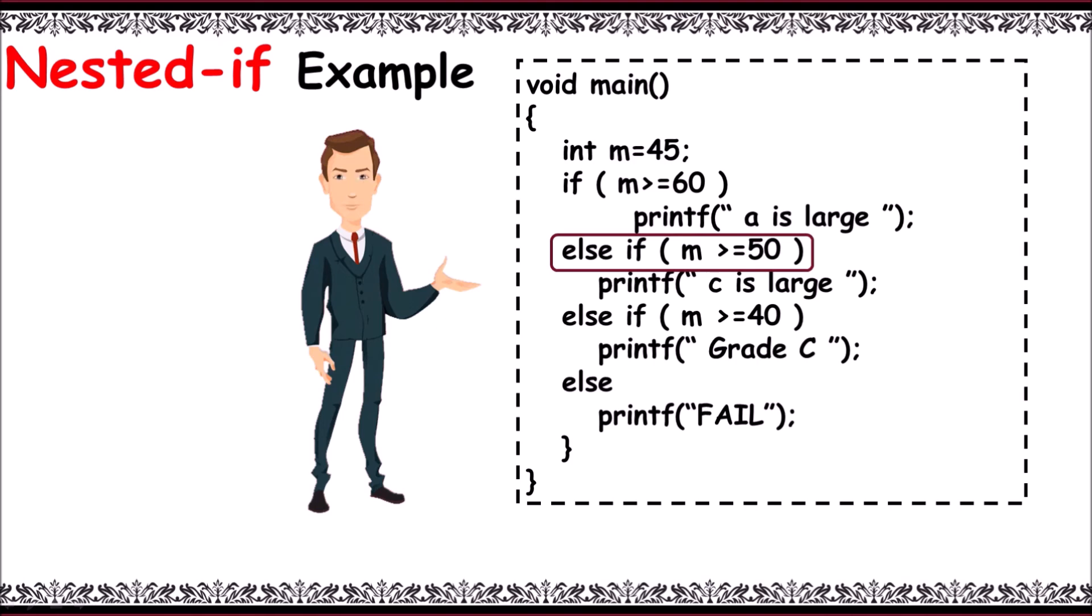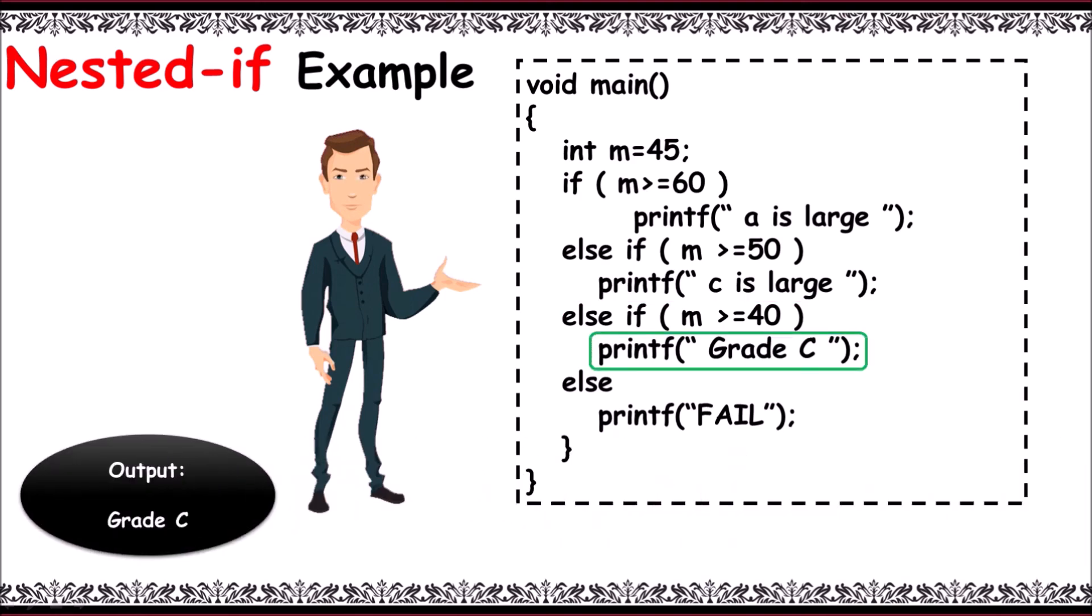to 50 condition is false, control checks another condition which is m greater than or equal to 40. As we know, 45 greater than or equal to 40, the condition is true. It prints grade C. The same grade C is printed as output.